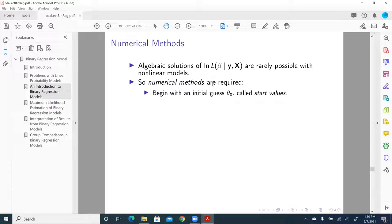So how to get the numerical results of the solution? Well, usually we begin with an initial guess, theta zero. So basically, we get a beta zero here. We just make a guess - we can begin with zero, or begin with five, a reasonable value - and we call that start value or initial value.